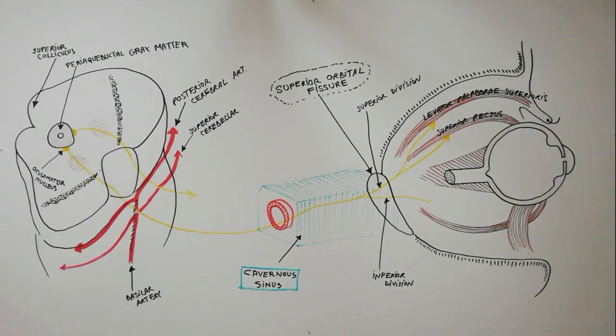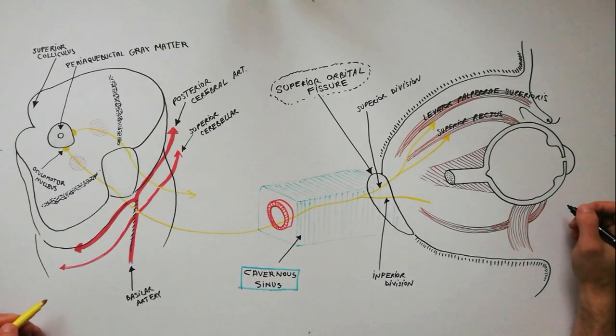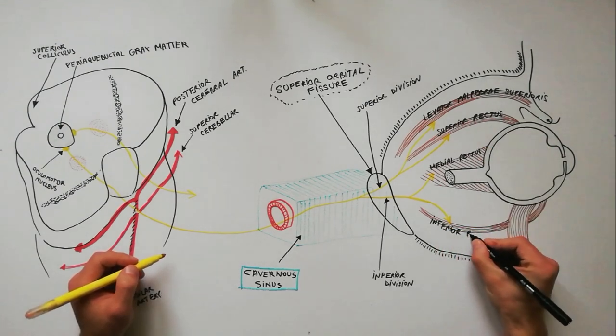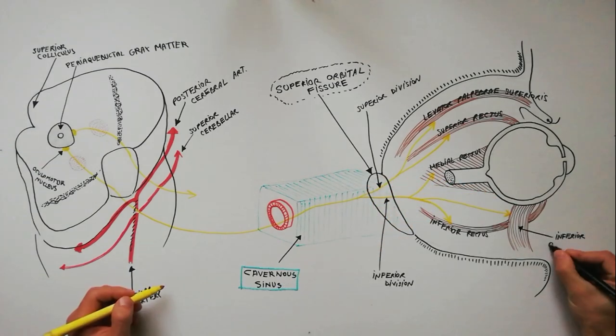The inferior division of the oculomotor nerve, the larger division, divides into three branches: a branch to the medial rectus, a branch to the inferior rectus, and the third branch, which is the longest, goes to the inferior oblique muscle.